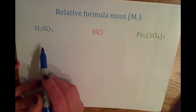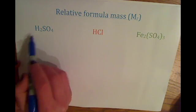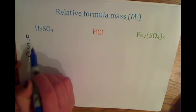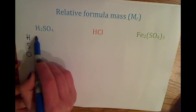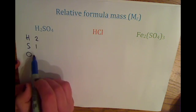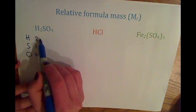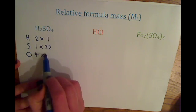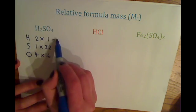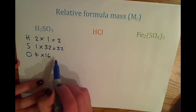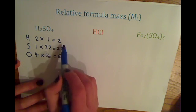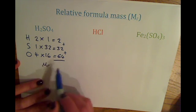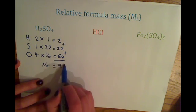So for H2SO4, you write down the elements in the compound as normal, write down how many atoms of each one there are, and then multiply these by their relative atomic mass. Adding all of these three numbers up will give you the relative formula mass of H2SO4, which is 98.